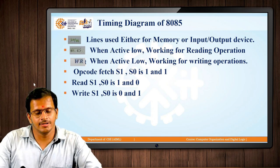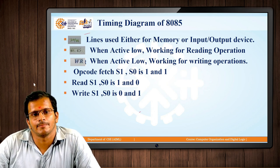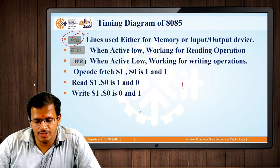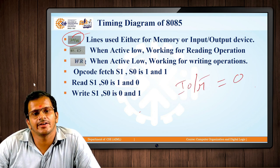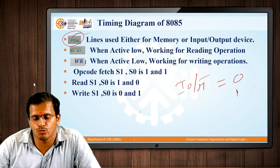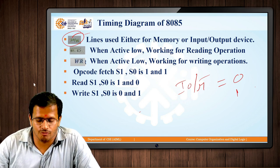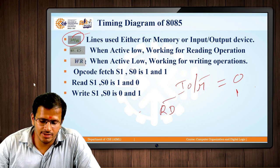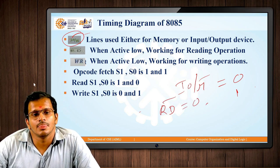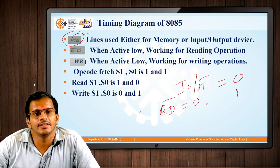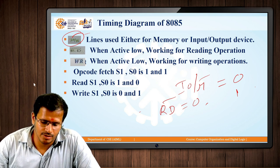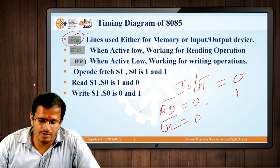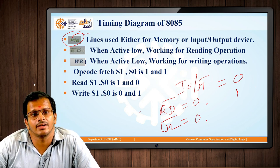The IO/M̄ line: when its value is 0, memory-related operations are performed; when it is 1, input/output operations are performed. When the value of R̄D̄ is 0, the microprocessor reads content from memory to itself. When the value of W̄R̄ is 0, content from the microprocessor is written into memory.